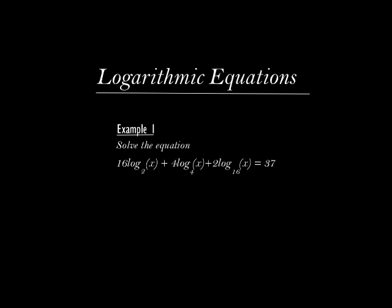Example number one: how do we use the laws of logarithms to solve logarithmic equations with different bases? In that problem, the first term is to base 2, the second term is base 4, the third term is base 16, and it equals 37. When we have a logarithmic equation with different bases, we have to simplify it by making all terms have the same base.